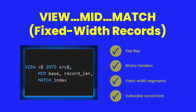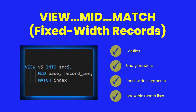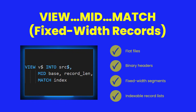The match form treats the string as a sequence of fixed-width records. You specify where the first record begins, how long each record is, and which record to view. This removes the need for manual offset arithmetic — no loops, no pointer math, no indexing mistakes. The nth record is always one view statement away.